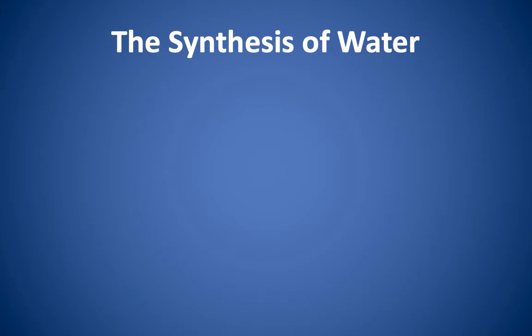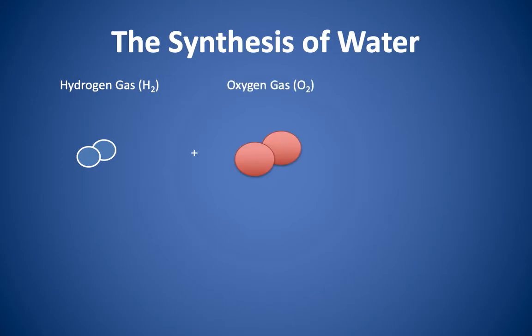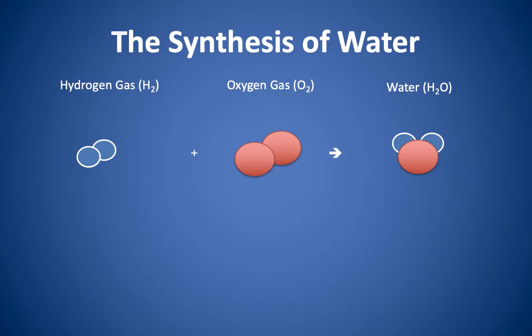We're going to start with something familiar — the synthesis of water. Water is composed of two elements, hydrogen and oxygen. Hydrogen is a diatomic molecule, H2, and oxygen is also a diatomic molecule, O2. When the two react, hydrogen gas and oxygen gas, it produces water, and the chemical formula for water is H2O. As we look at the models used for this reaction, something should look not quite right. If we look at the two reactants, we can see that both hydrogen atoms in the H2 molecule show up as a product, but only one of the oxygen atoms shows up as a product, which means we have a leftover oxygen atom.